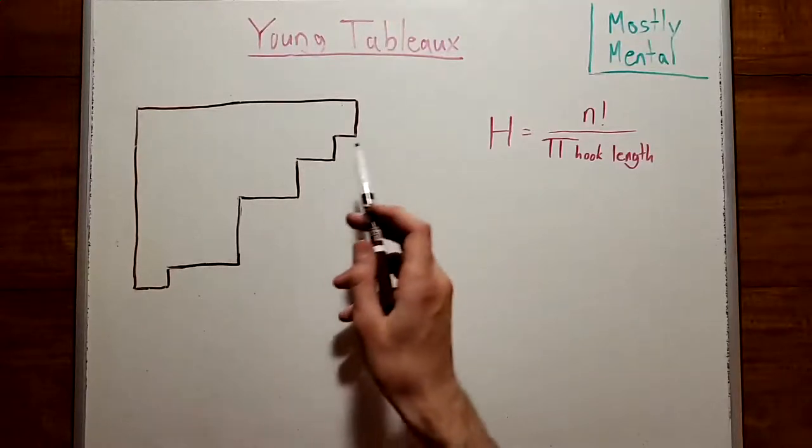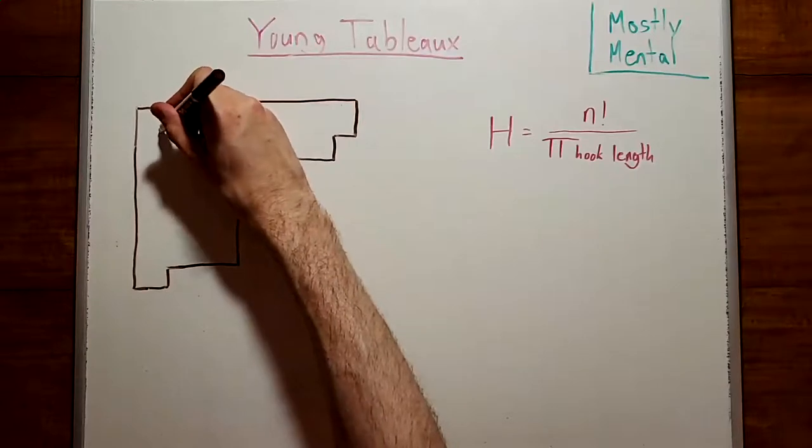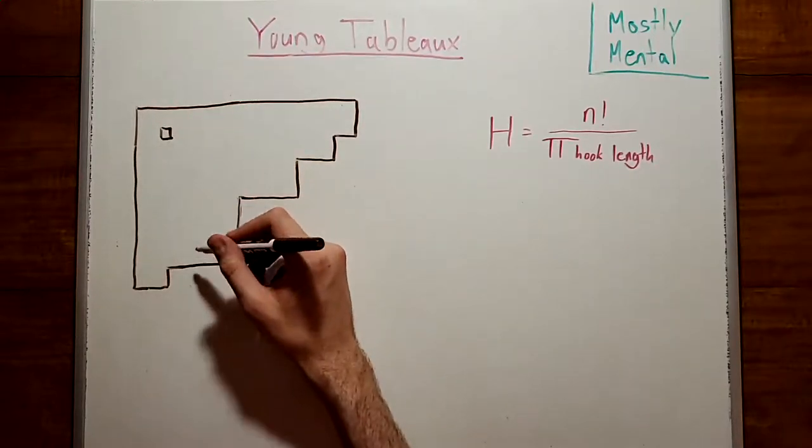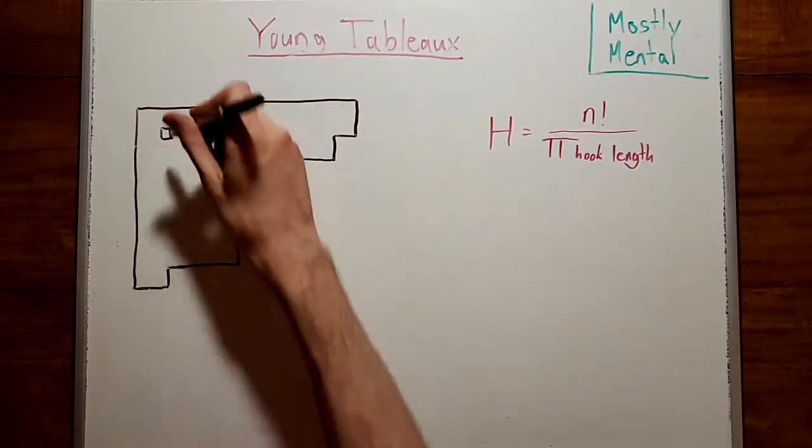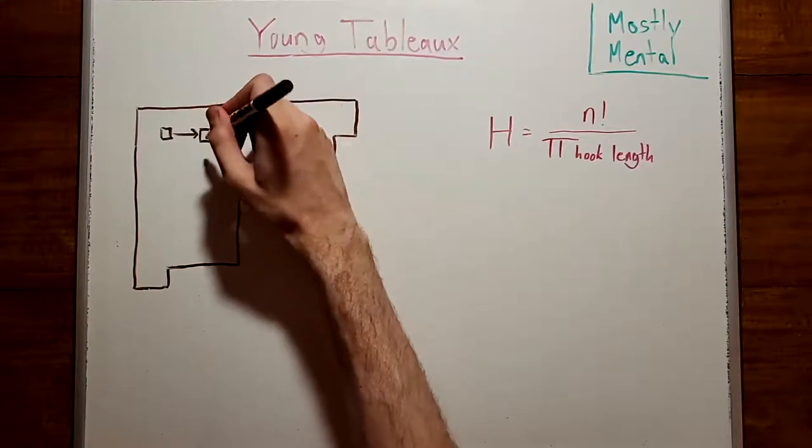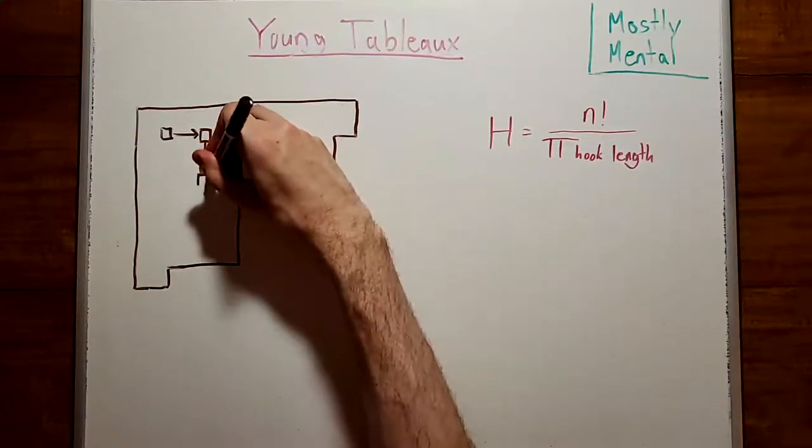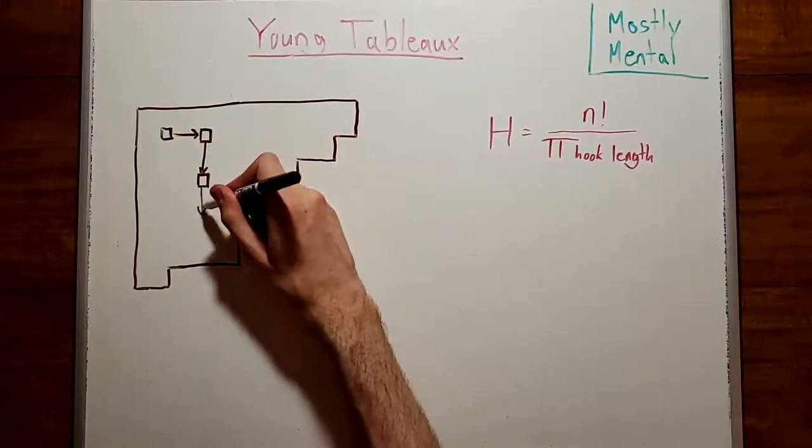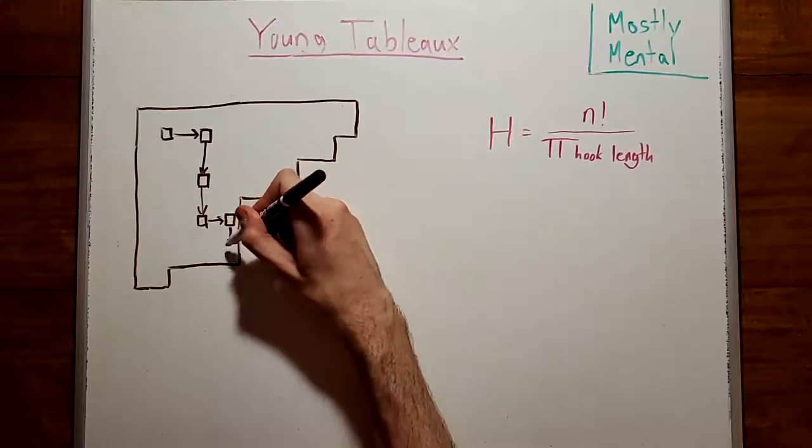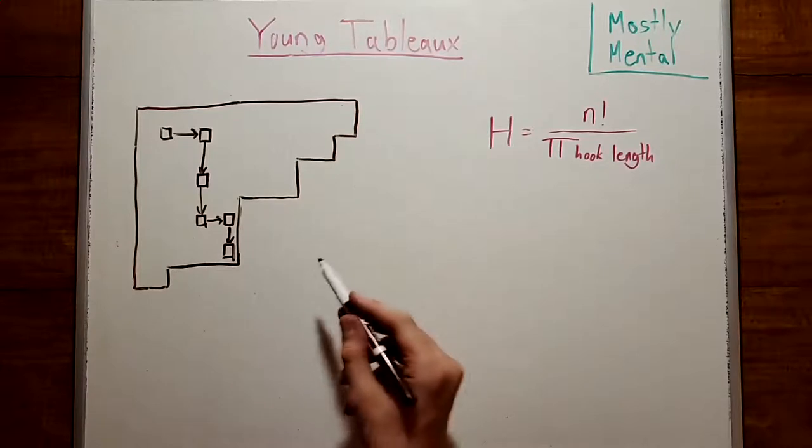We can solve this problem by instead looking at what are known as random walks. We'll take our tableau, which will look something like this, and choose a box somewhere within it at random. And from there, we'll choose a box somewhere within its hook, again at random, and jump to that. And then we'll repeat. Jump from there to a box at random within its hook, and jump, and keep going, until eventually we end up at a box in a corner like this, where there's nowhere left to go.